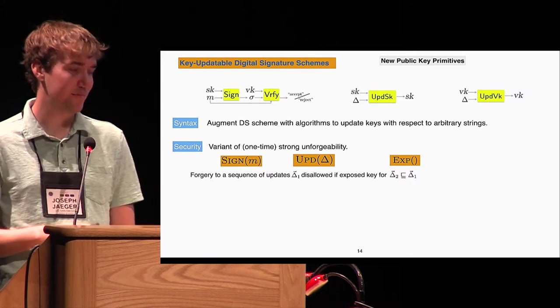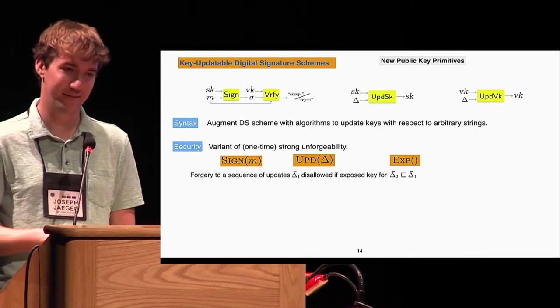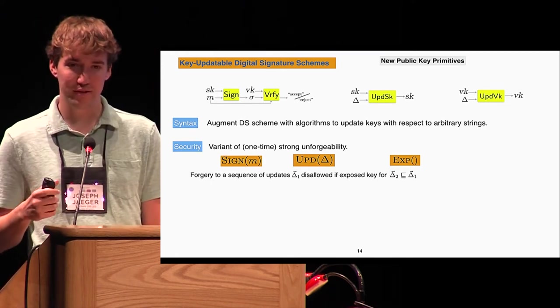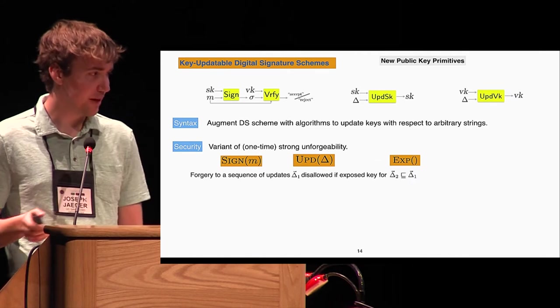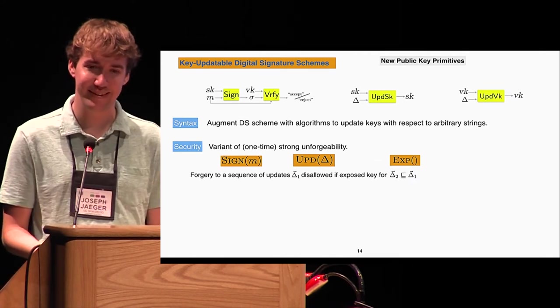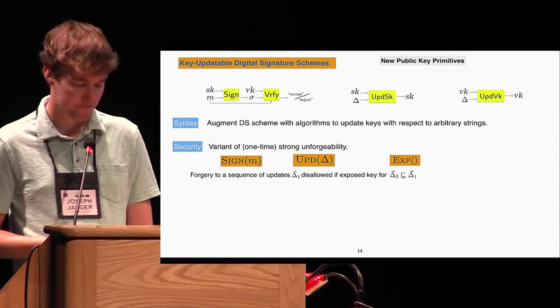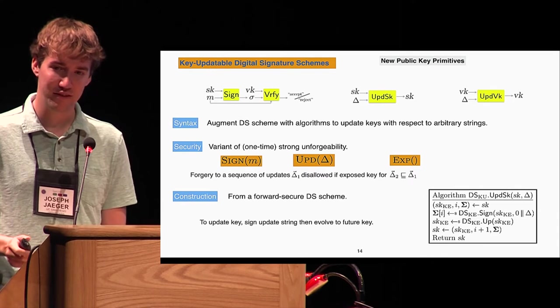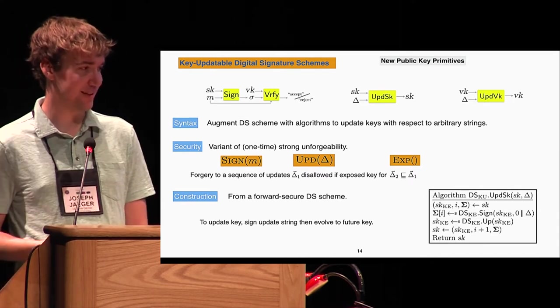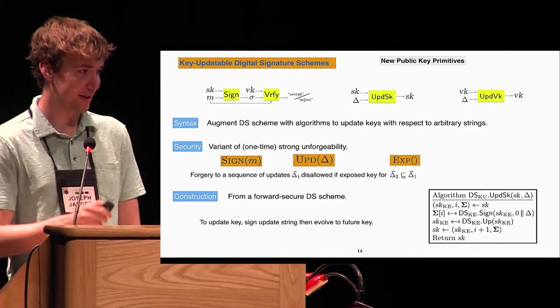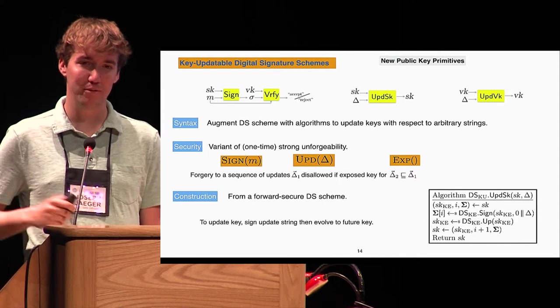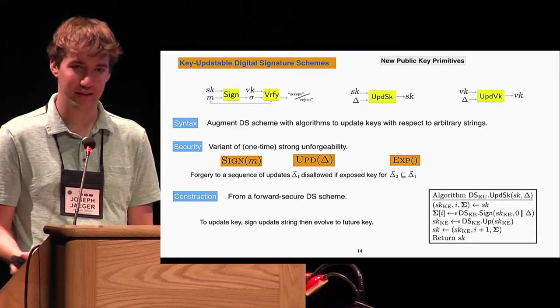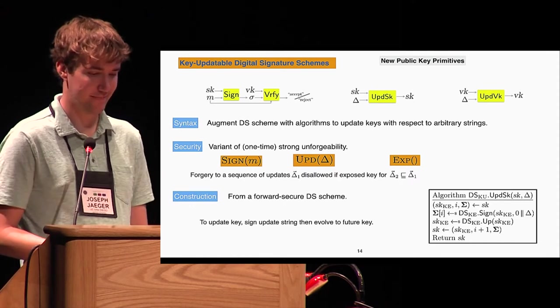For security, we defined a variant of strong unforgeability where in addition to the usual signing algorithm given to an attacker, there's an update algorithm oracle which will update the secret key with an attacker, and an exposure oracle which gives the current secret key back to the attacker. Their goal is to create a forgery, with the obvious restriction that we prevent trivial attacks of exposing a signing key, maybe updating it a few times, and then just signing your own message. To construct this, we were able to do so from any normal forward-secure digital signatures. The only difference of this new primitive is that our updates need to happen with respect to delta, and the way we incorporate that into the update is before you ratchet your key forward, you first sign delta with your old key, and then that signature will be included in future signatures.